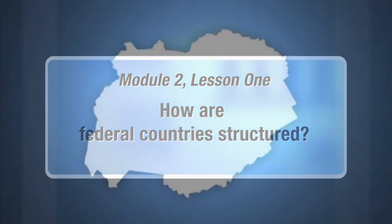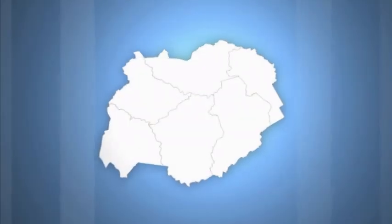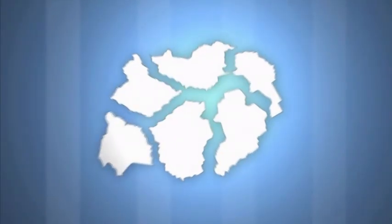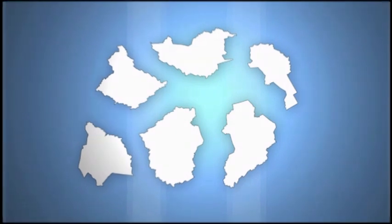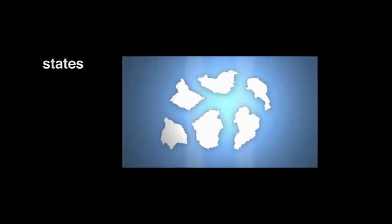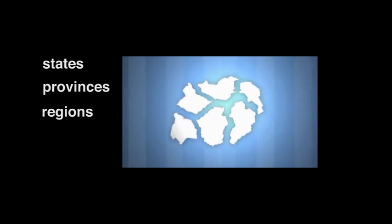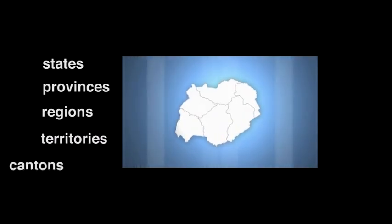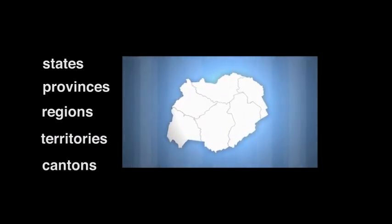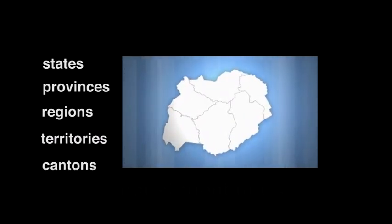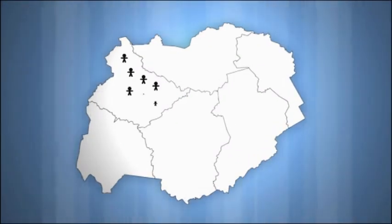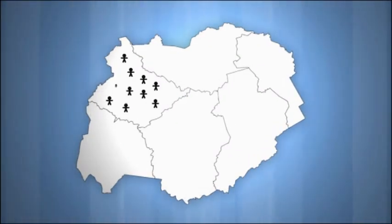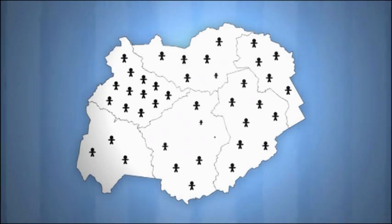How are federal countries structured? First of all, the structures vary. The units that make up federal countries have many names: states, provinces, regions, territories, cantons. All of them can be called constituent units. They are the individual bodies that together constitute the whole country.